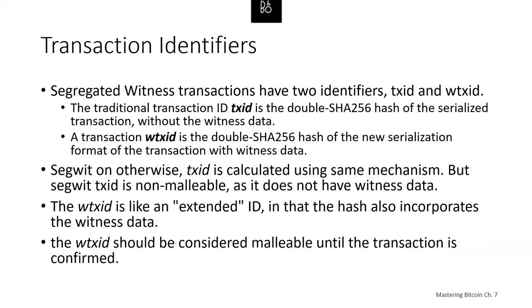One of the key benefits of segregated witness is that it eliminates third-party transaction malleability. Before segregated witness, transactions could have their signatures subtly modified by third parties, changing their transaction hash without changing fundamental properties of the inputs, outputs, and amounts — creating opportunities for denial-of-service attacks and attacks against poorly written wallet software that assumed unconfirmed transactions were immutable. With segregated witness, transactions have two identifiers: a TXID and a WTXID. The traditional TXID is a double-SHA256 hash of the serialized transaction without witness data; the WTXID is a double-SHA256 hash of the new serialized format with witness data. Since a pure SegWit transaction has empty scriptSigs in every input, there is no part of the transaction that can be modified by a third party, eliminating transaction malleability.